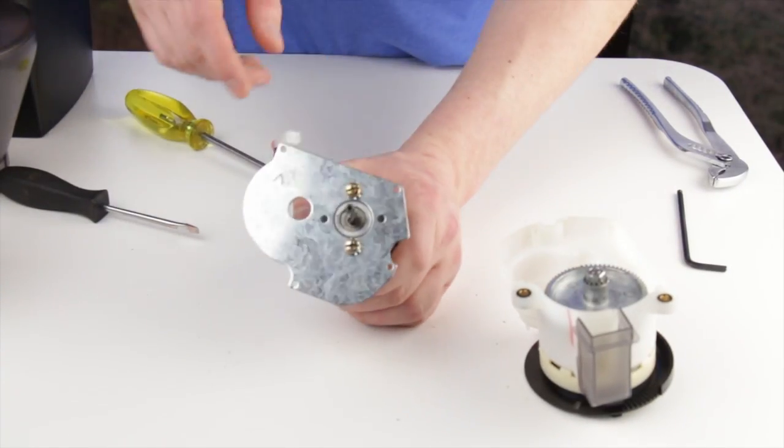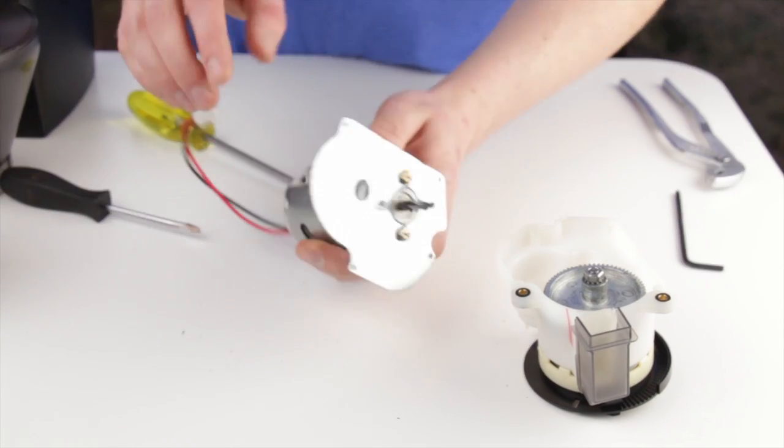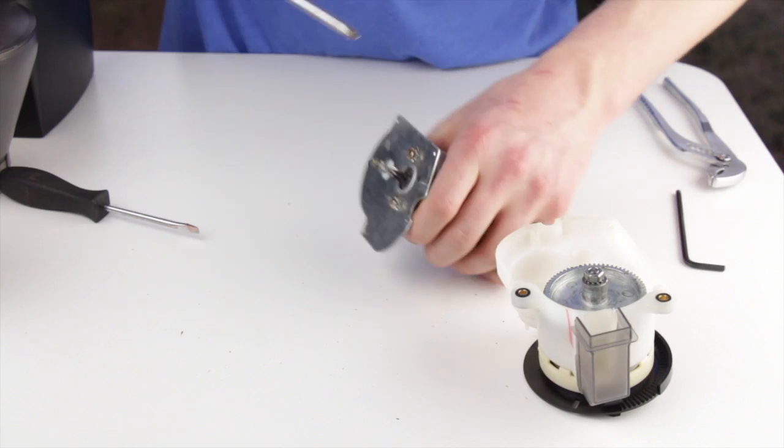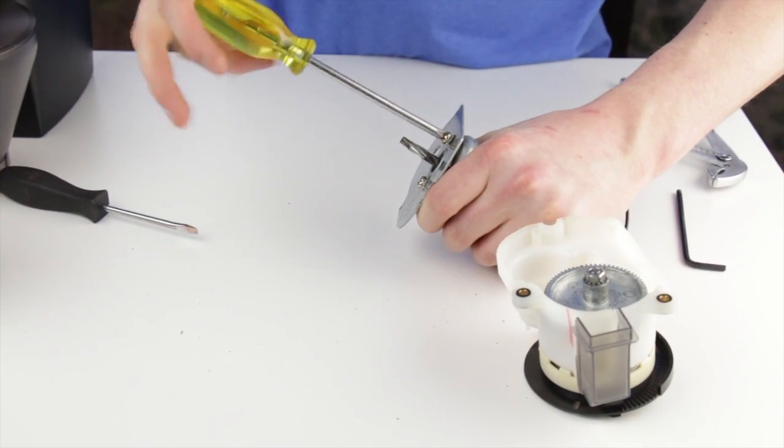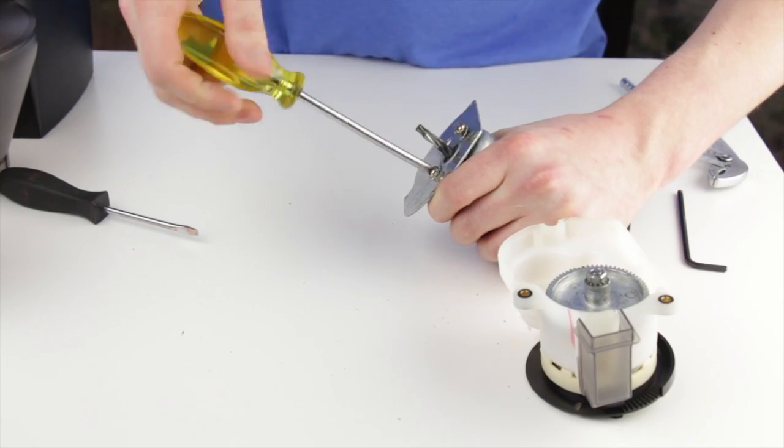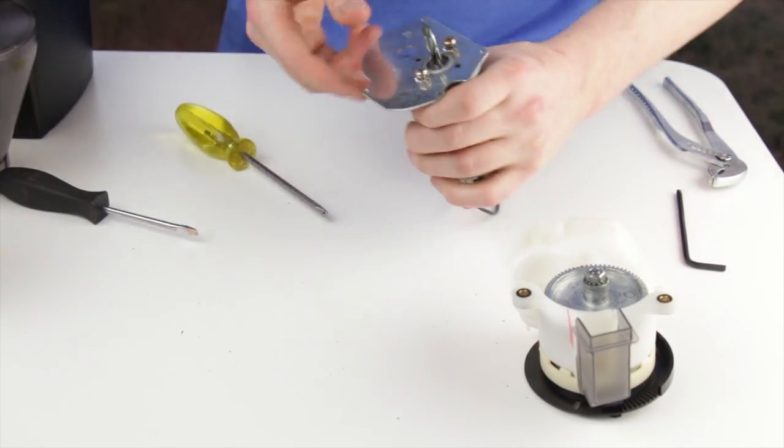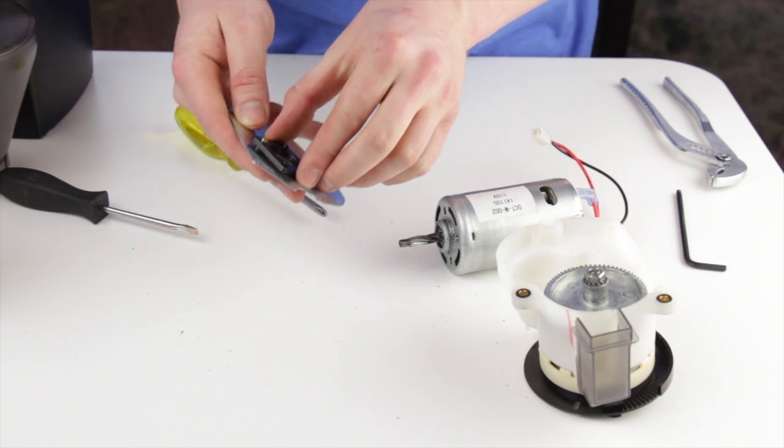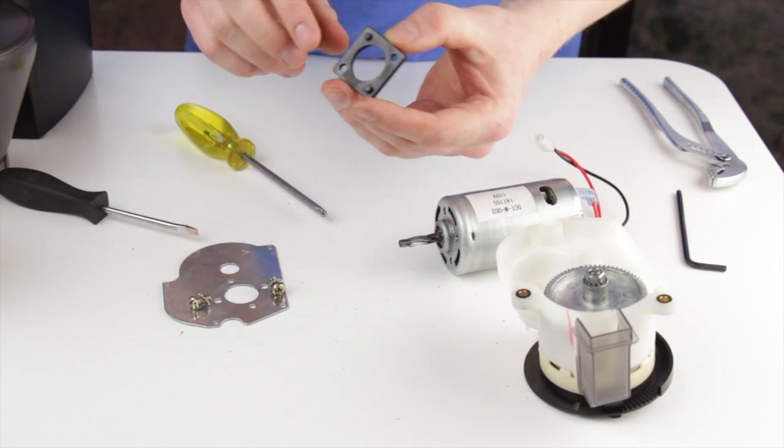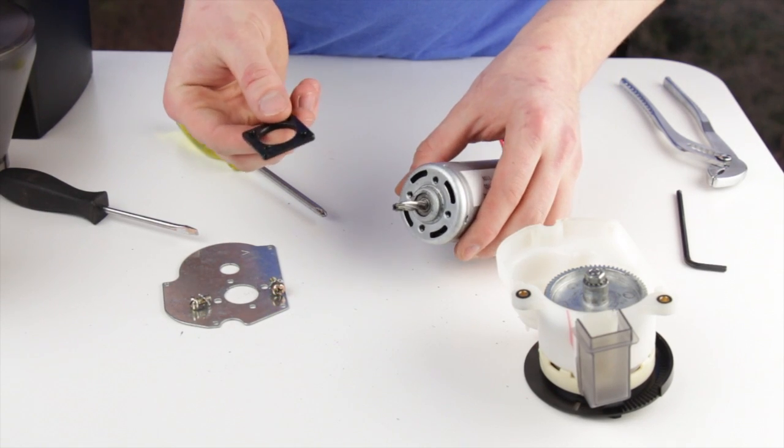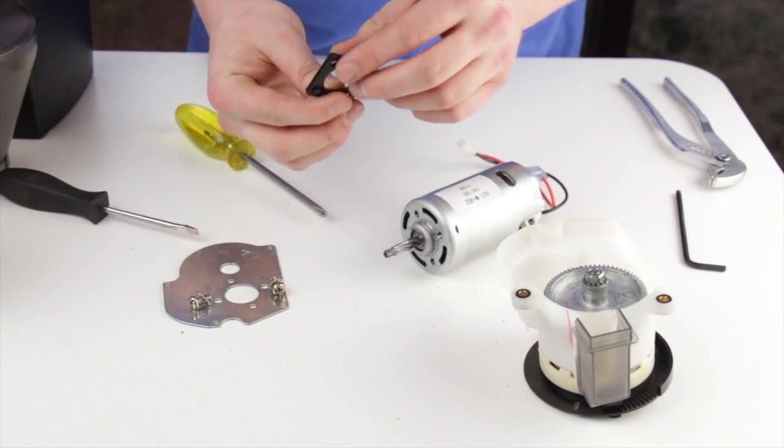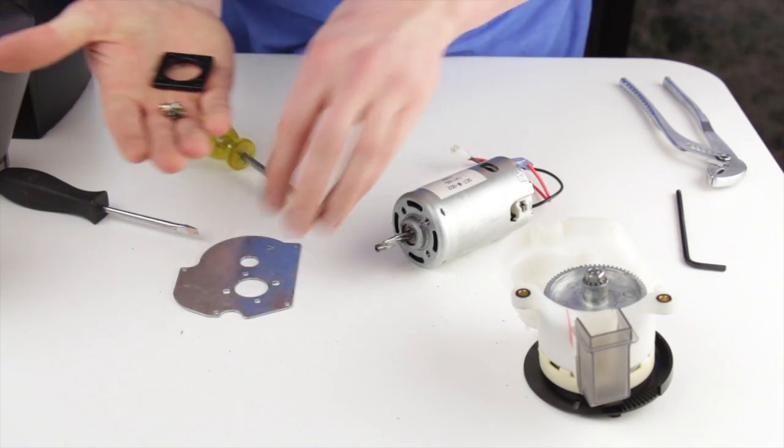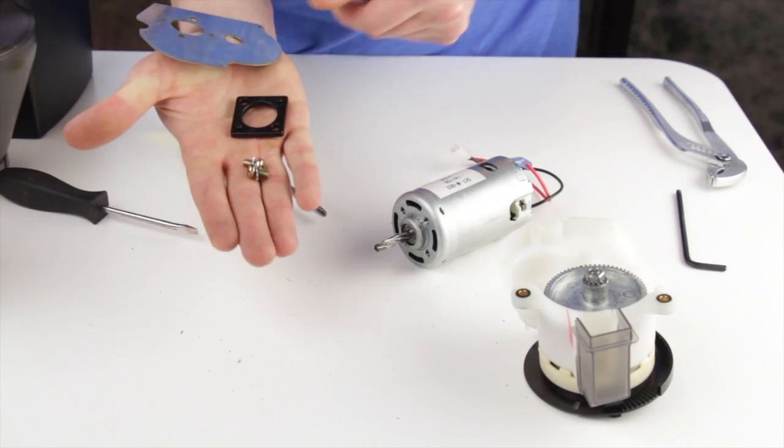Our next step will be to remove the motor plate from the motor. You can see there are two Phillips screws securing it. Between the motor plate and the motor there is a black spacer. The black spacer and the old motor plate as well as the old motor plate screws will all be discarded.